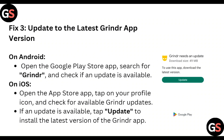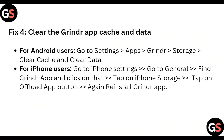Now update the Grindr app to the latest version. On Android, open the Google Play Store, search for Grindr, and check if an update is available. On iOS, open the App Store, tap the profile icon, and check if a Grindr update is available. If an update is available, tap to install the latest version.